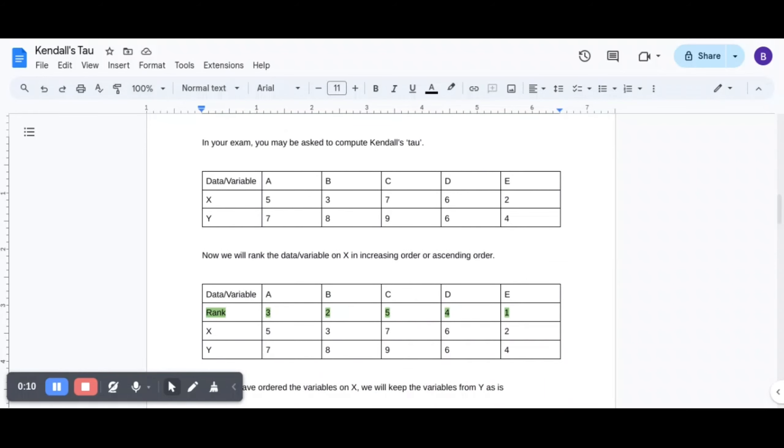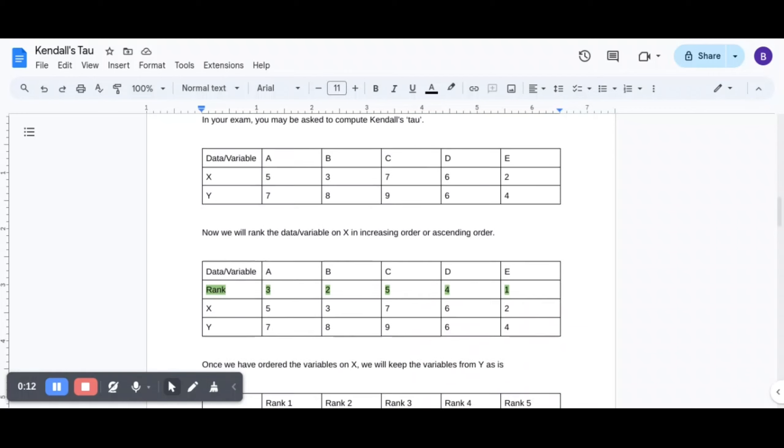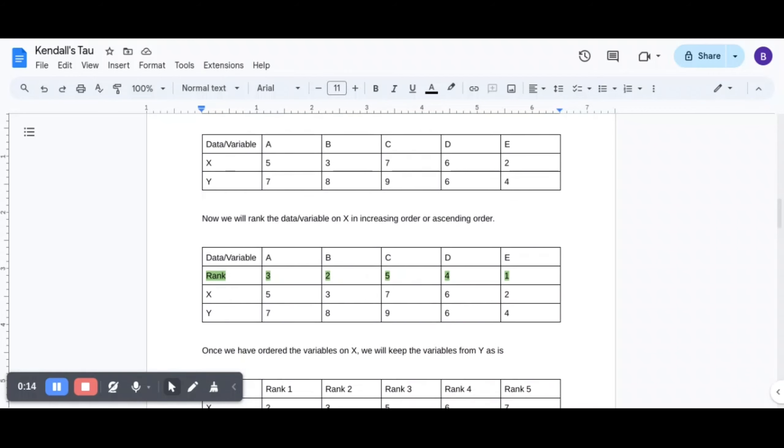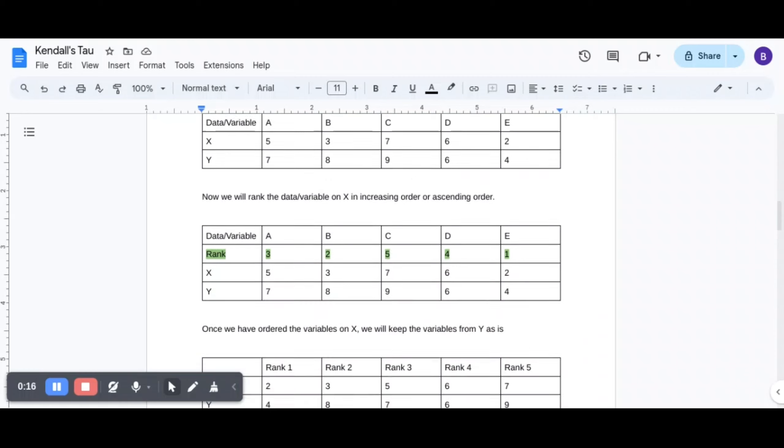For X, you have values 5, 3, 7, 6, 2 and for Y, you have values 7, 8, 9, 6, 4. Now, we will have to rank the data variable on X in an increasing or ascending order.